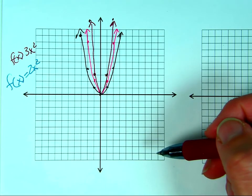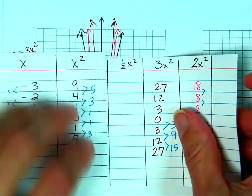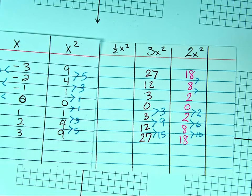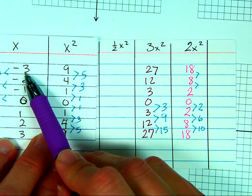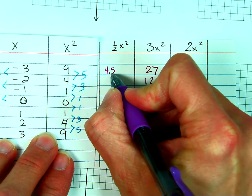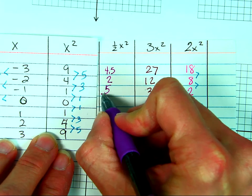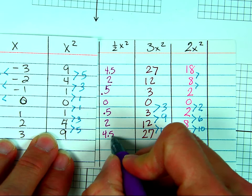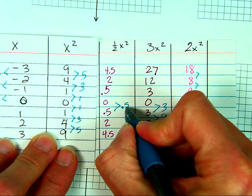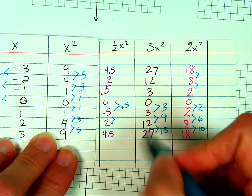Without plugging in a bunch of numbers, I just remembered my pattern. Now what happens if A is one half? You'd take negative 3, square it to get 9, and take half of 9 — that's 4.5. Then negative 2 squared is 4, half is 2. One squared is 0.5. So the pattern becomes 0.5, 1.5, 2.5 — which is half of 1, 3, 5. If you start recognizing that the pattern values equal A times 1, A times 3, A times 5, it's going to really help you.